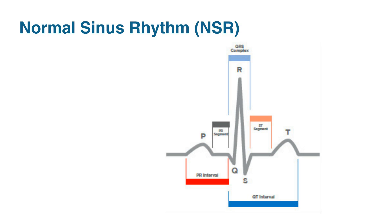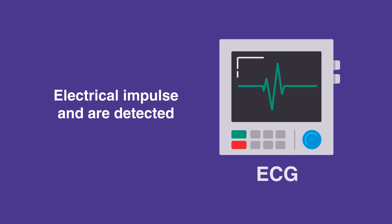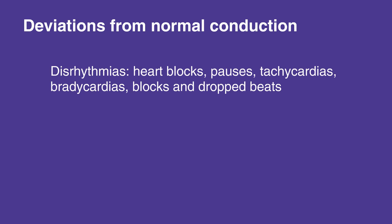Abnormalities in the conduction system can cause delays in the transmission of the electrical impulse and are detected on the ECG. These deviations from normal conduction can result in dysrhythmias, such as heart blocks, pauses, tachycardias, bradycardias, and dropped beats.